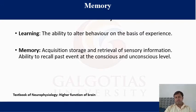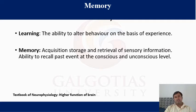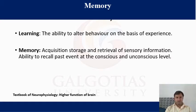If we discuss about learning, the ability to alter behavior on the basis of experience is called learning. And if we talk about memory, it is acquisition, storage and retrieval of sensory information — the ability to recall past events at the conscious and unconscious level.